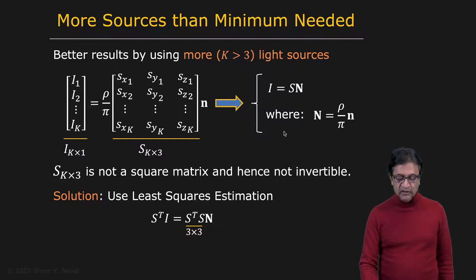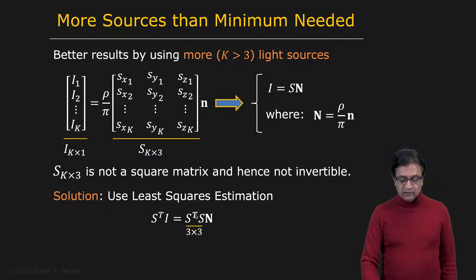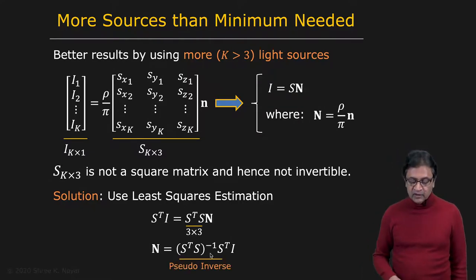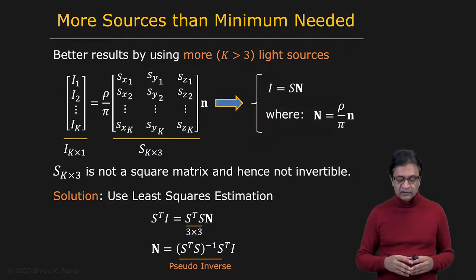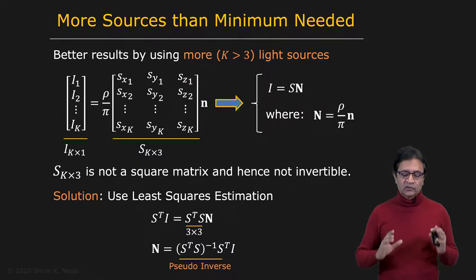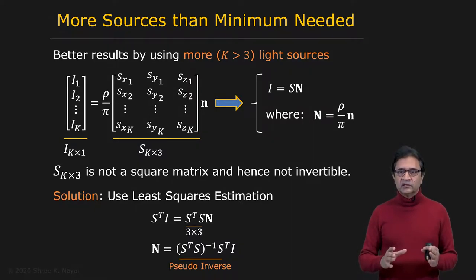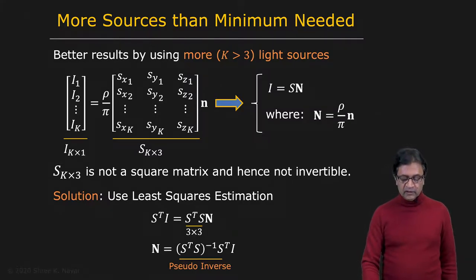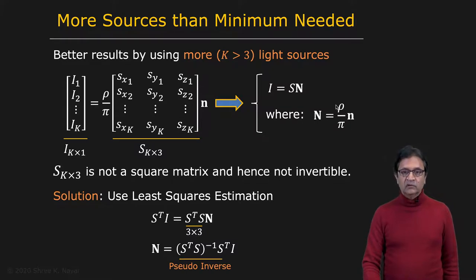We know how to solve this with the least squares method. We pre-multiply the equation I = S·N by S-transpose, giving S-transpose·S·N = S-transpose·I. Then we invert S-transpose·S, which is a three by three matrix, to get N. This whole term is called the pseudo-inverse. So you throw all light sources into the source matrix S, compute S-transpose·S, find its inverse, and recover the normal vector N. The unit normal is N divided by its magnitude, and the magnitude gives you albedo divided by pi.